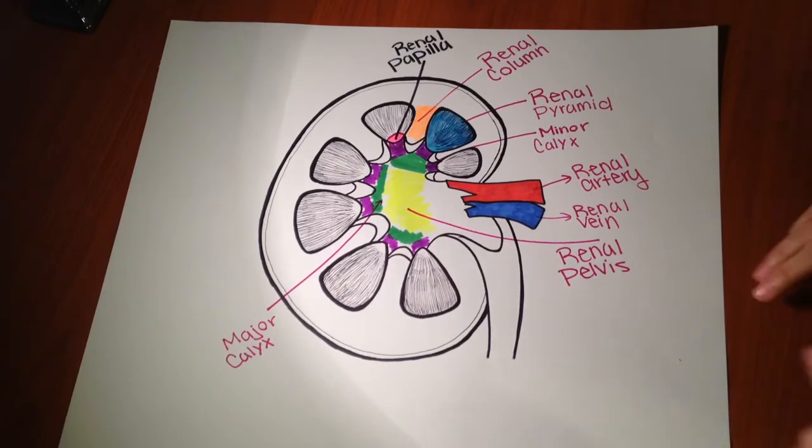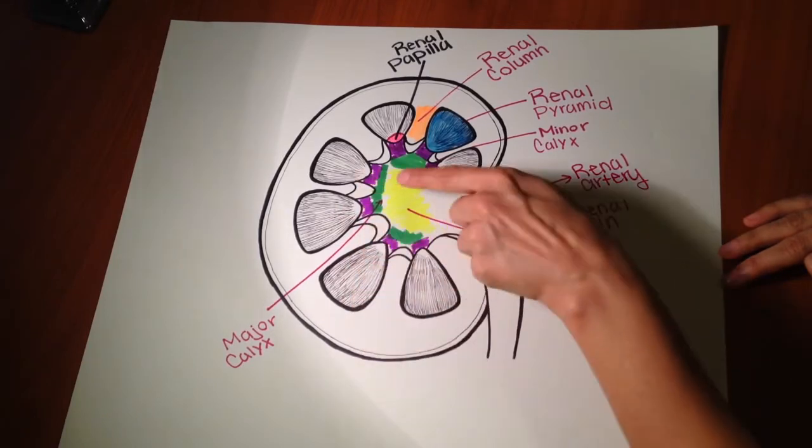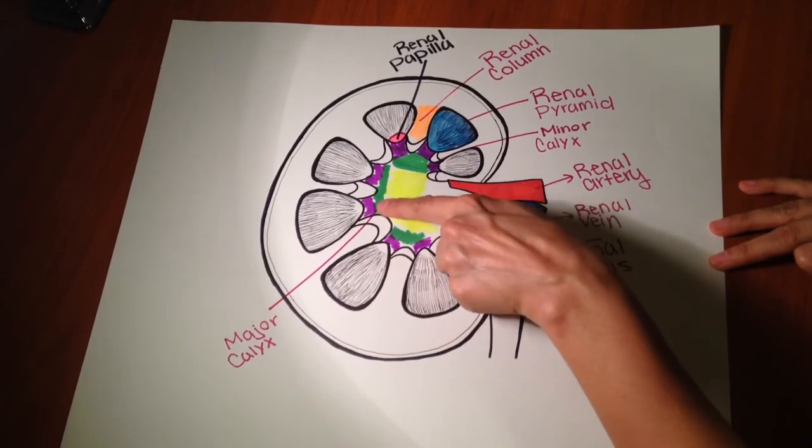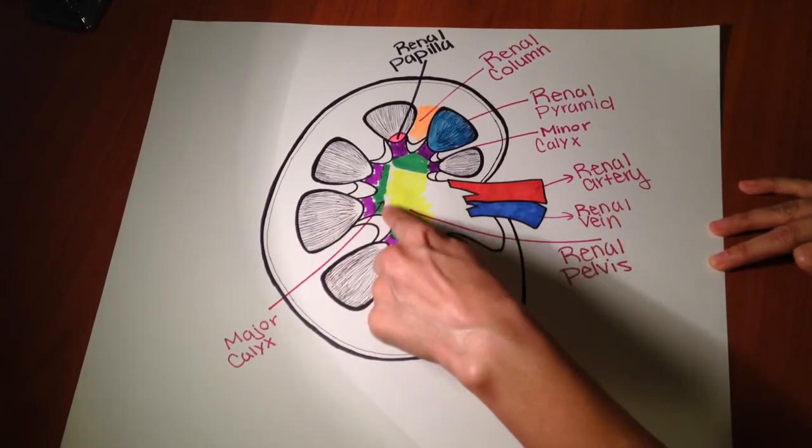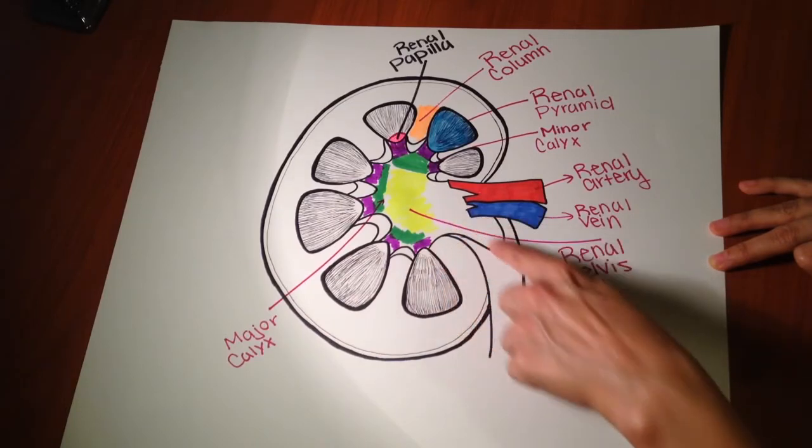So basically, urine is going to be secreted by the renal papilla into the minor calyx and then it pours into the major calyx, renal pelvis, and then eventually the ureter.